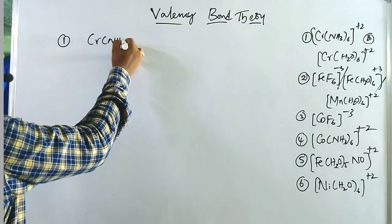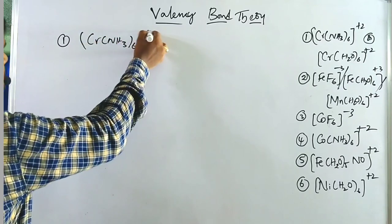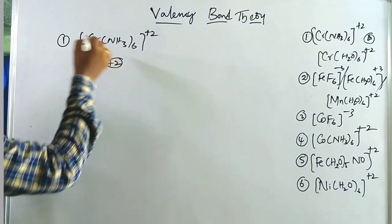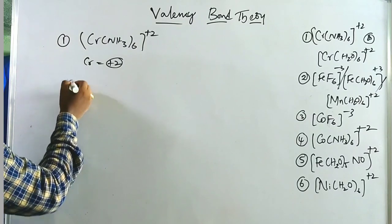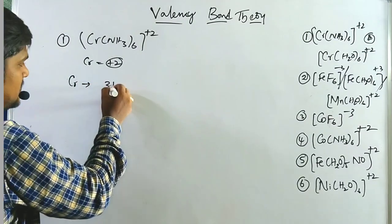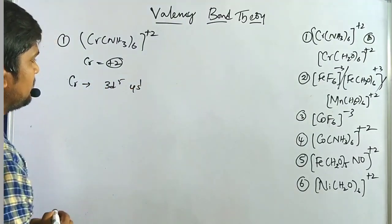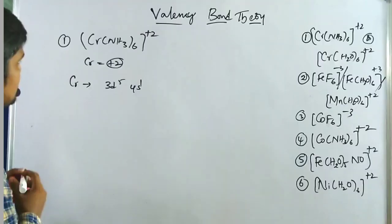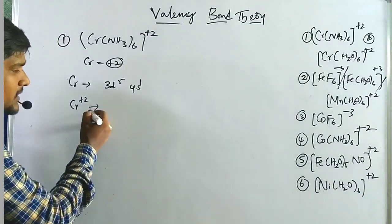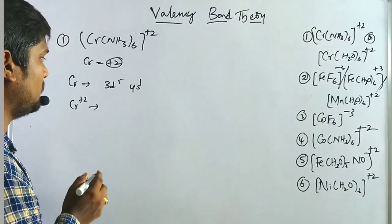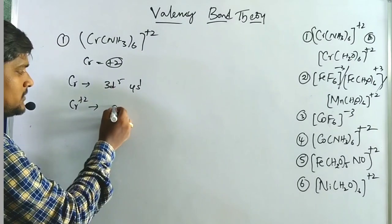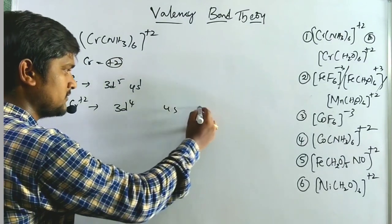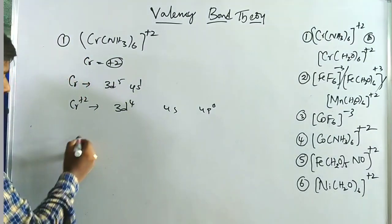The first example is [Cr(NH₃)₆]²⁺. Here chromium is in the +2 oxidation state. Chromium's configuration is 3d⁵ and 4s¹. Chromium +2 means the loss of 2 electrons — one from the 4s orbital and one from the 3d orbital — giving a configuration of 3d⁴, 4s⁰, 4p⁰.